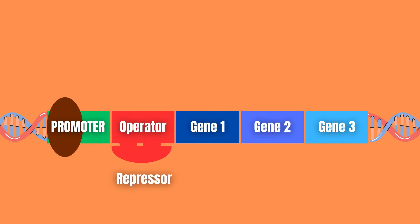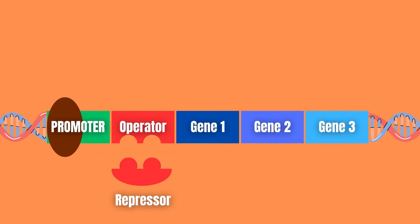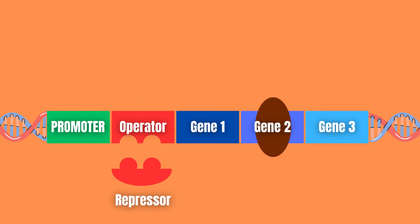If the repressor is bound to the operator, it prevents the RNA polymerase from transcribing the genes. If, on the other hand, the repressor is not bound to the operator, it allows the RNA polymerase to transcribe the genes.